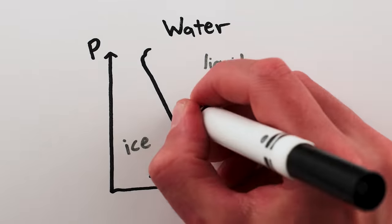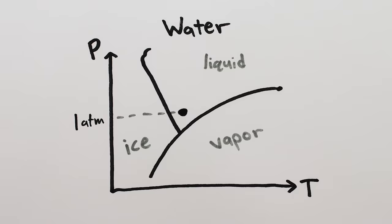On the phase diagram for water, you can see here that at normal atmospheric pressure, when you cool water down, it goes from a liquid to a solid, as you'd expect.